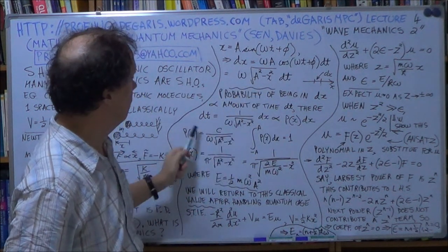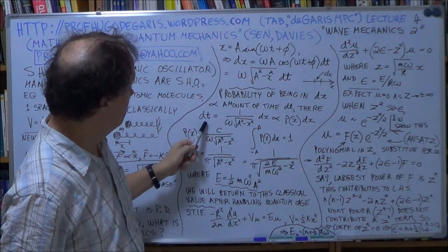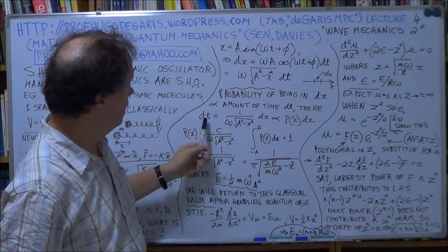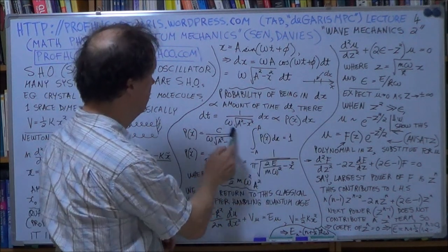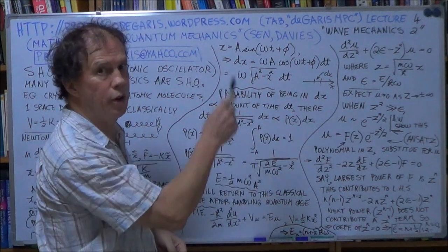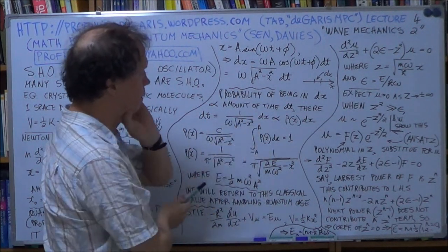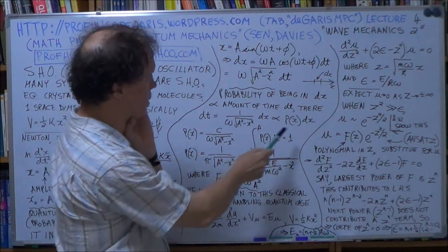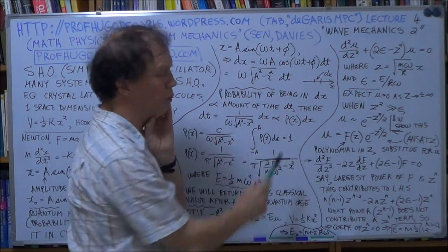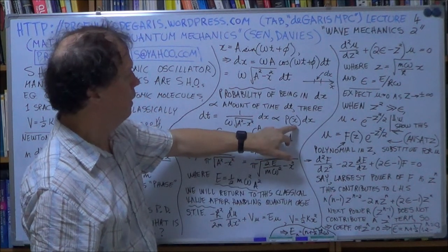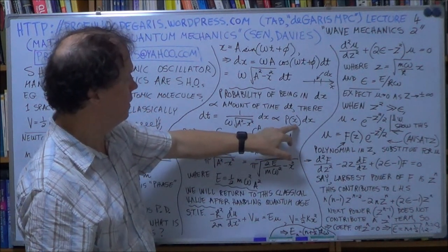And that amount of time, well, put it this way, so this one over omega square root thing, this here will be proportional to your probability density of finding the particle at this x.